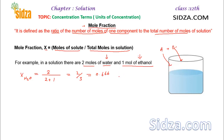Similarly, we can find the mole fraction of ethanol. That will be equal to one mole of ethanol divided by the total number of moles, two plus one, which is 1/3 — so it is 0.333.